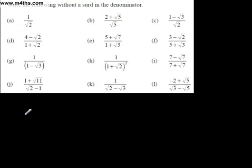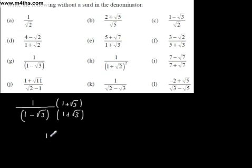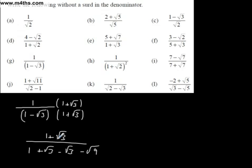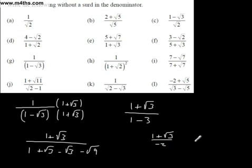Now, 1 over 1 minus root 3 — we multiply top and bottom by the conjugate 1 plus root 3. The top is just 1 plus root 3. Expanding the bottom long form: 1, plus root 3, minus root 3, and then minus root 3 times root 3 which is minus 3. It's just 1 squared minus root 3 squared, giving 1 minus 3 equals negative 2. So we end up with 1 plus root 3 over negative 2, or equivalently, minus one-half times the quantity 1 plus root 3.